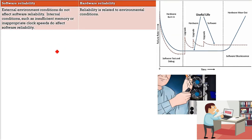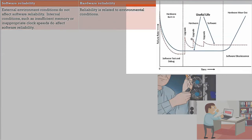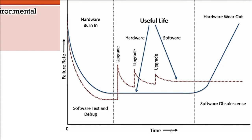In software reliability and hardware reliability, let us see the difference. This is a bathtub curve. On the x-axis we have time, on the y-axis we have failure rate — how many failures will happen depending upon the time. This blue line is like a bathtub. When hardware starts, there will be great errors, but slowly these errors will be less, and finally there will be a straight line where there will be no problems. This is the useful life for that hardware.